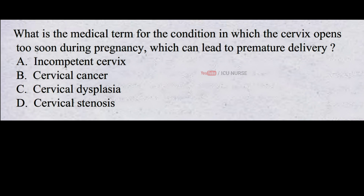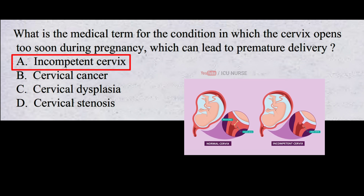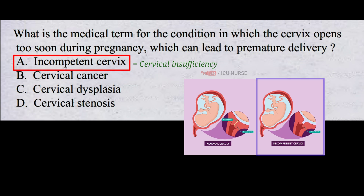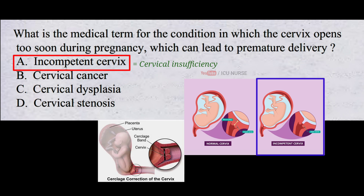What is the medical term for the condition in which the cervix opens too soon during pregnancy, which can lead to premature delivery? A. Incompetent cervix. B. Cervical cancer. C. Cervical dysplasia. D. Cervical stenosis. And the correct answer is A. Incompetent cervix, also known as cervical insufficiency. This is a condition in which the cervix begins to dilate and efface prematurely, usually in the second trimester. This can cause premature labor and delivery. In some cases, a procedure called a cervical cerclage may be used to prevent or delay premature delivery.